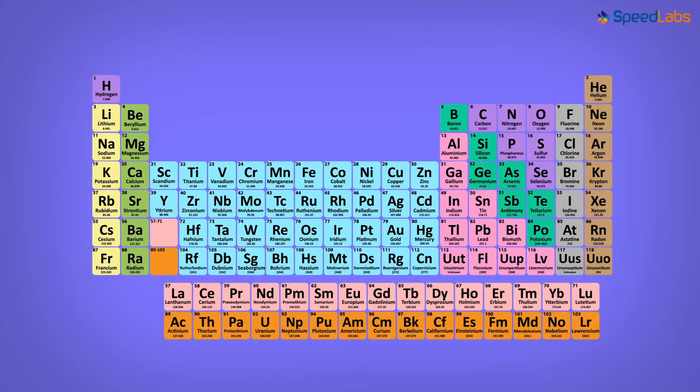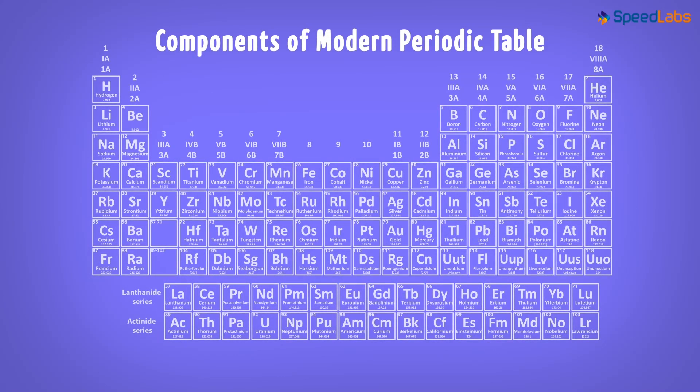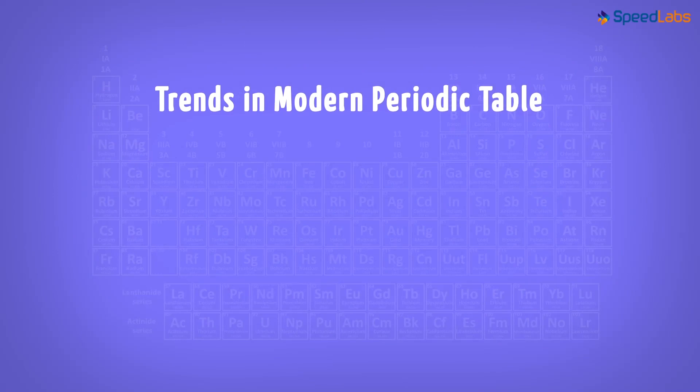We have taken a look at how exactly the arrangement of elements makes up the modern periodic table. We've also seen what the components forming it are and how we define these components, that is, the groups and the periods. Now let us talk about the trends in the periodic table.